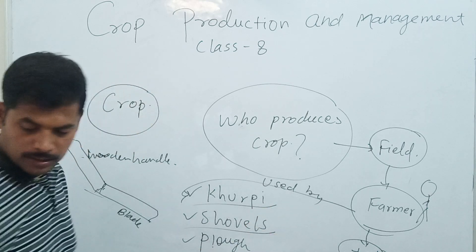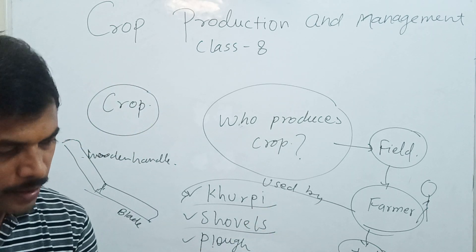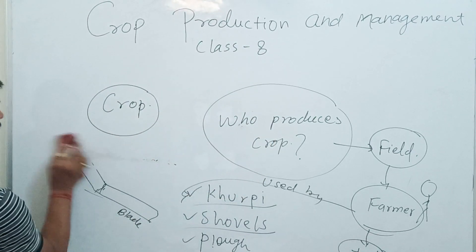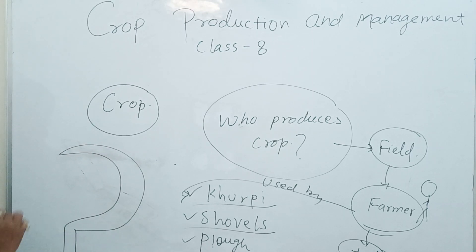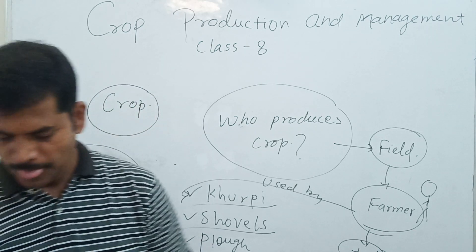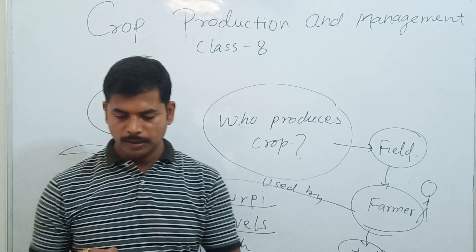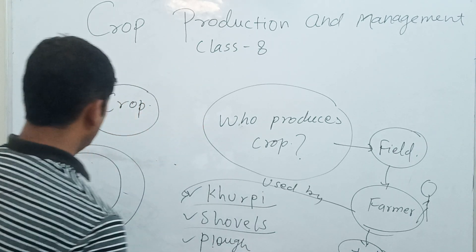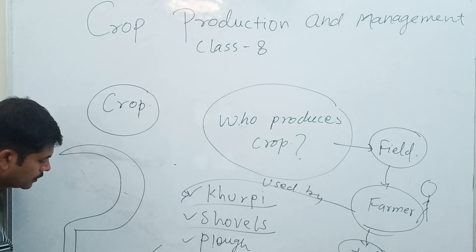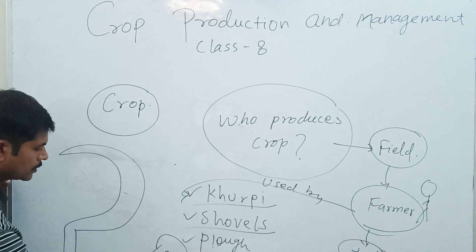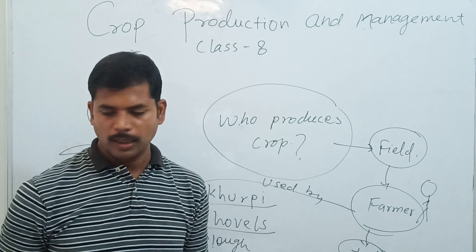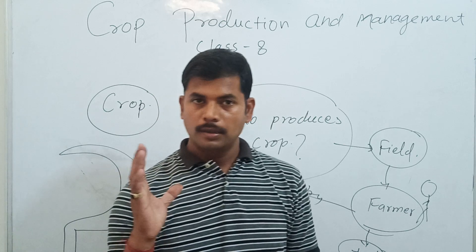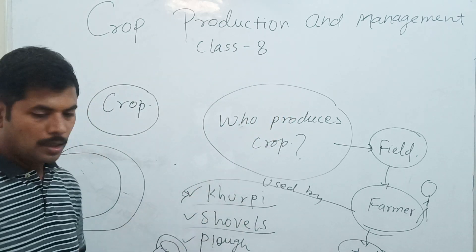Kurpi is a cutting tool with a flat blade which is used for removing small weeds from the field. Another tool is the Sickle. There are also tools used for digging the field, lifting materials, or loosening the soil — that is called a Plough. So these are some tools which are used by farmers.